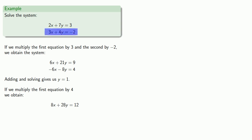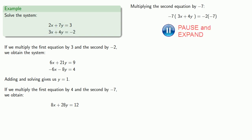For the second equation, we multiply by -7, the negative of the coefficient of y in the first equation. That gives us -21x - 28y = 14.